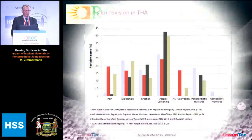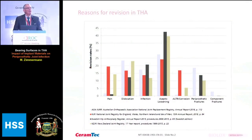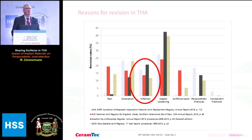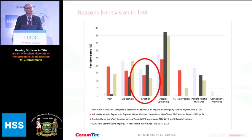Why discuss PJI? If you look at this picture about the reasons for revision for primary total hip arthroplasty based on recent registries, you can see that some registries indicate PJI is now the number two reason for revision for primary hip arthroplasty, with aseptic loosening still being number one.